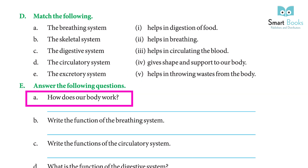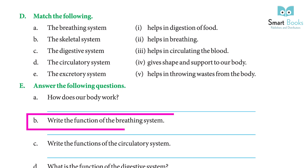Answer the following questions: (Q1) How does our body work? Our body receives messages and orders for action from the sense organs and other body parts. The brain controls all other systems in the body. (Q2) Write the function of the breathing system. The breathing system supplies oxygen to the various parts of our body. This oxygen is used to burn food and give us energy to do work.